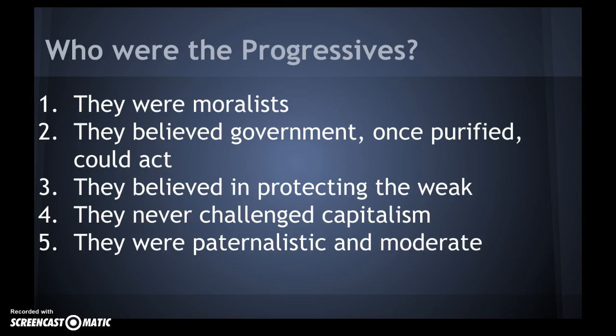The five main qualities: they were moralists, meaning they were trying to make people's values pure. They believed that government, once purified, could act. They believed in protecting the weak — that's a little bit of social Darwinism there. They never challenged capitalism, so they were not socialists, anarchists, or Marxists. And five, they were paternalistic — that's a good term to review; it means fatherly, acting protective toward the weak. They were also moderate, not radical, so to make a big change in society they needed to stay moderate.